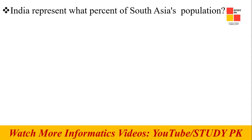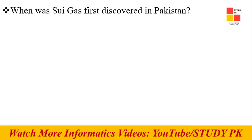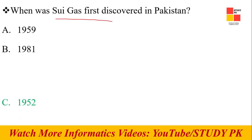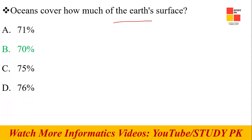India represents 70% of the total South Asia's population. Next question: When was sui gas first discovered in Pakistan? The answer is 1952. Next question: Oceans cover how much of the earth's surface? 70% is the right option.